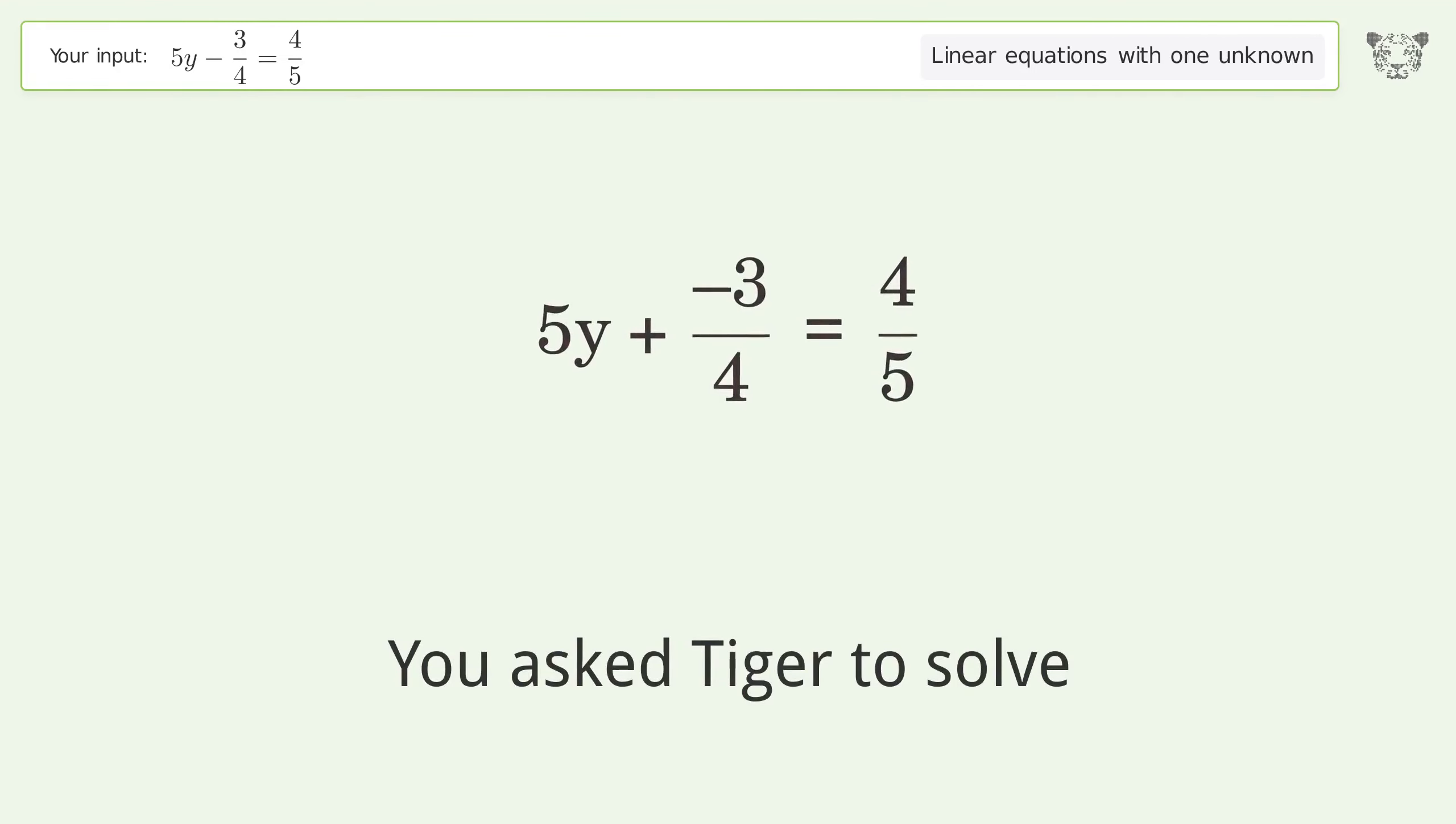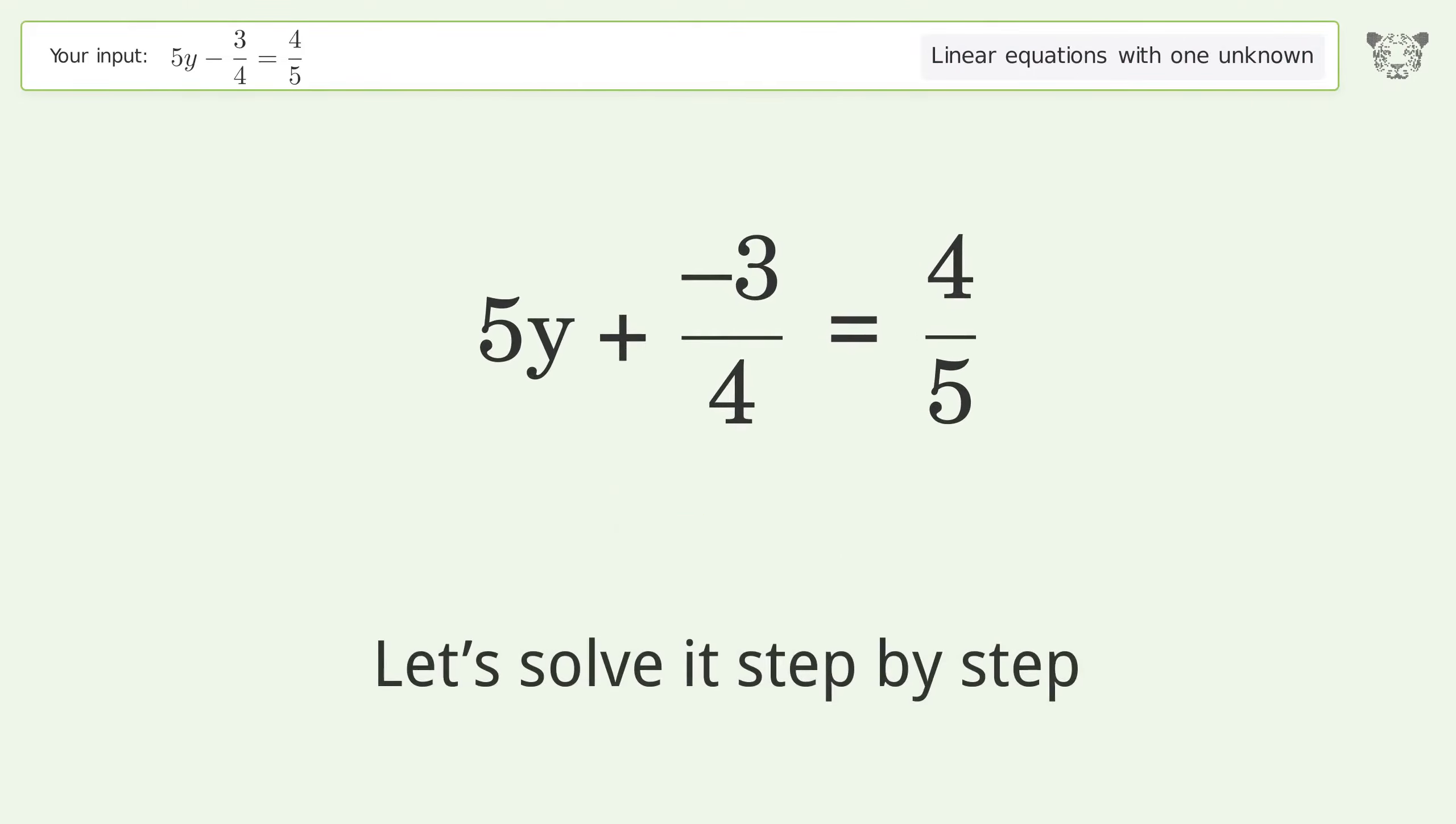You asked Tiger to solve this linear equation with one unknown. The final result is y equals 31 over 100. Let's solve it step by step.